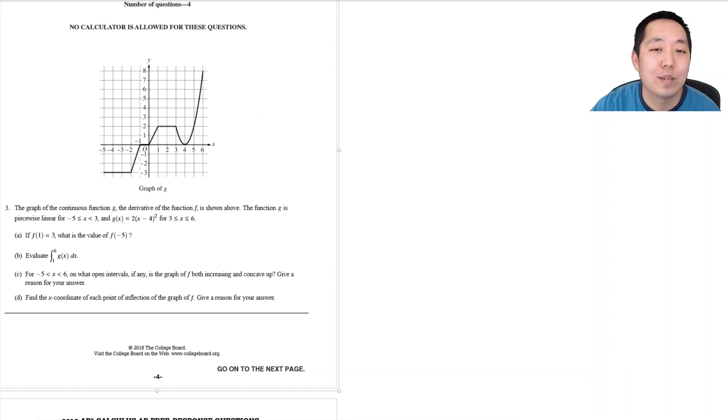Hi all, this is Alan with Bothell STEM Coach and today we're looking at the next 2018 AP Calculus free response question. So we have a graph of a continuous function G, the derivative, which is the derivative of the function G is the derivative of f shown above. The function G is piecewise linear and then has this kind of parabola part here over here.